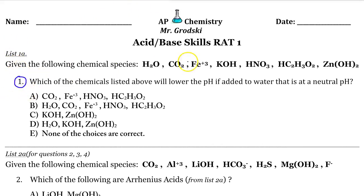We are going to start with number one of this beautiful RAT. Given the following chemical species, which of the following will lower the pH? Obviously I'm talking about acids. So who are acids? Well, this is careful though. If added to water, we know that water can be an acid. Not a very good acid. Its Ka is 1 times 10 to the negative 14, but it can be considered an acid.